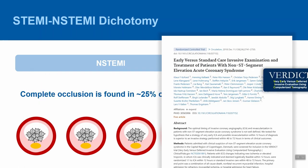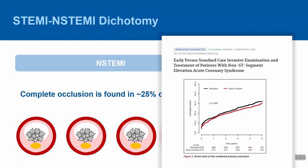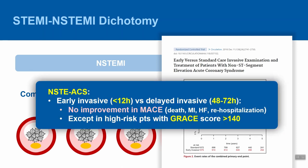The VERDICT trial similarly looked at early versus delayed invasive strategy for NSTEMIs. The early invasive strategy was defined as less than 12 hours with a median of 4 hours, compared to a delayed strategy of 48 to 72 hours with a median of 62 hours. Once again, there was no improvement in MACE — death, MI, heart failure, or rehospitalization — unless GRACE scores were greater than 140, in which case the early invasive strategy was favored.